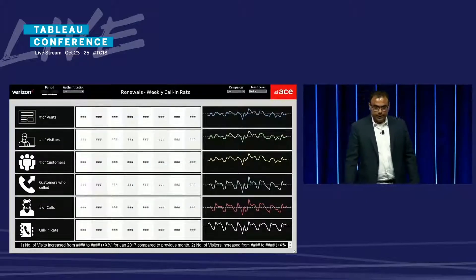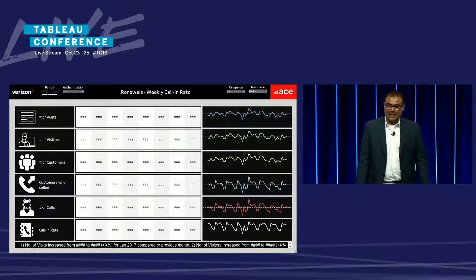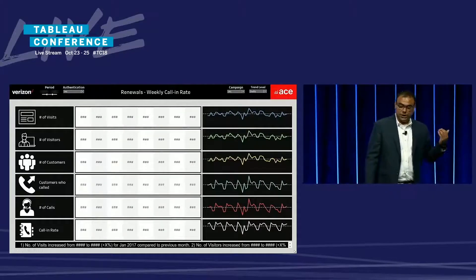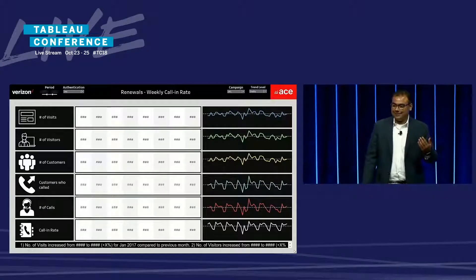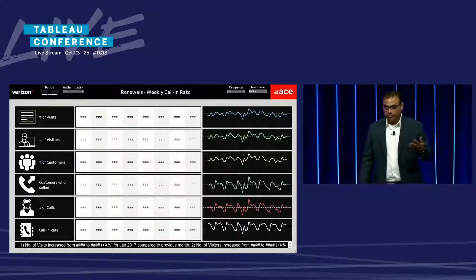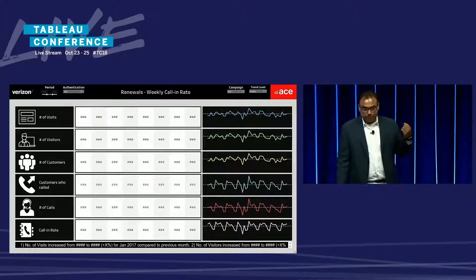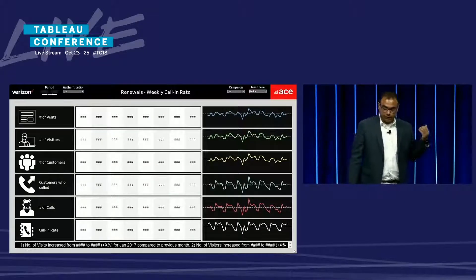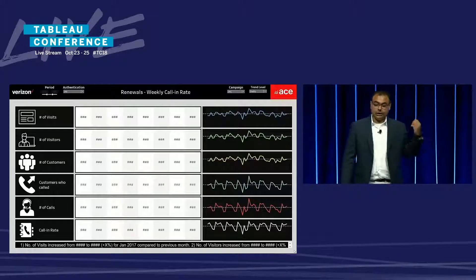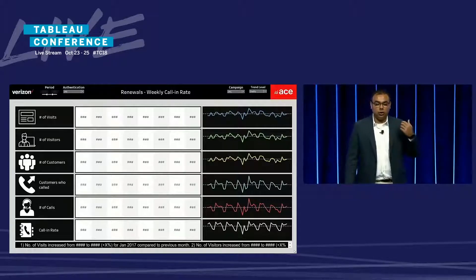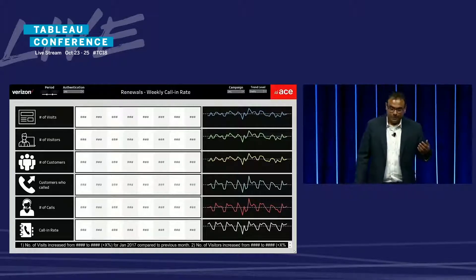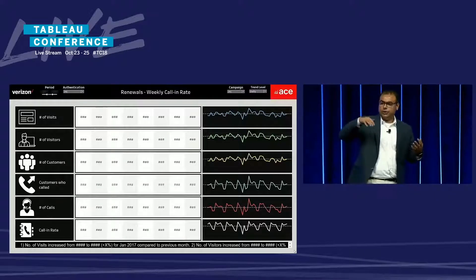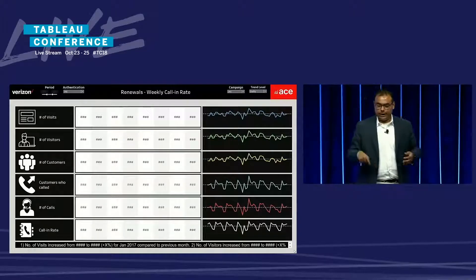Here we see our renewal flow. For each campaign selected on the top filter, we see the number of visits, the number of visitors, the number of customers, the customers who called, how many calls they made, and the call-in rate. You can also see line graphs showing how those metrics fluctuate over time.